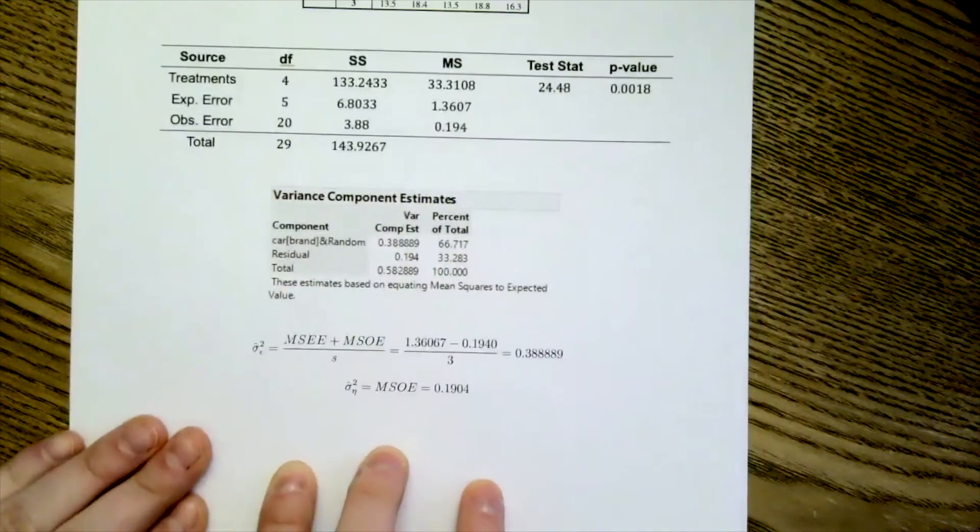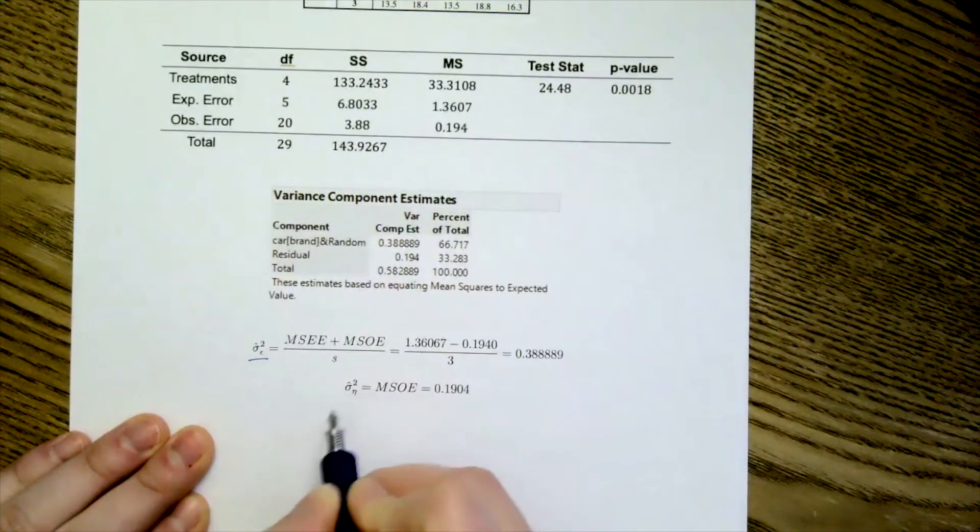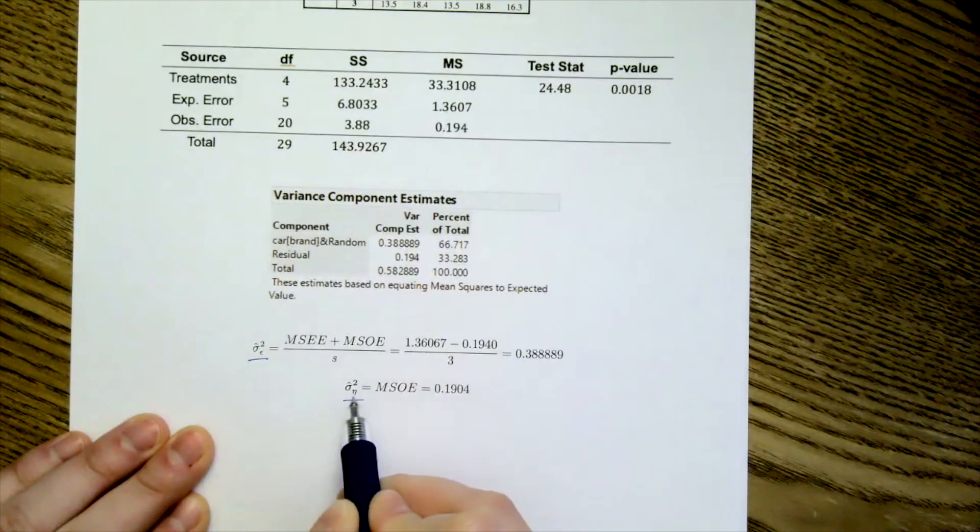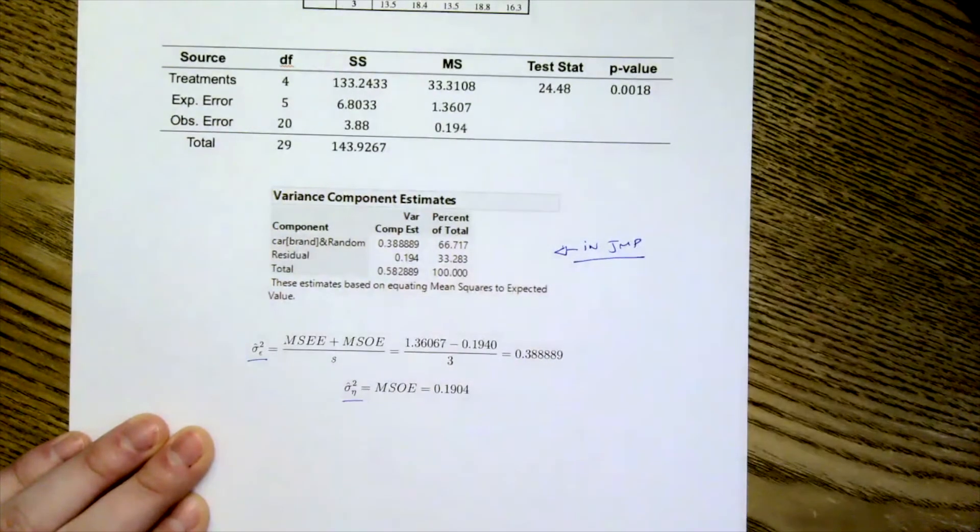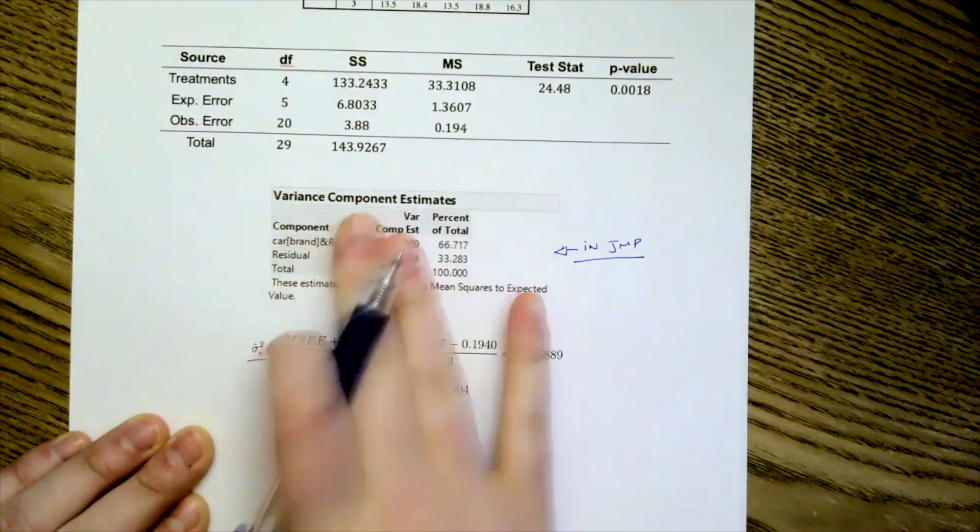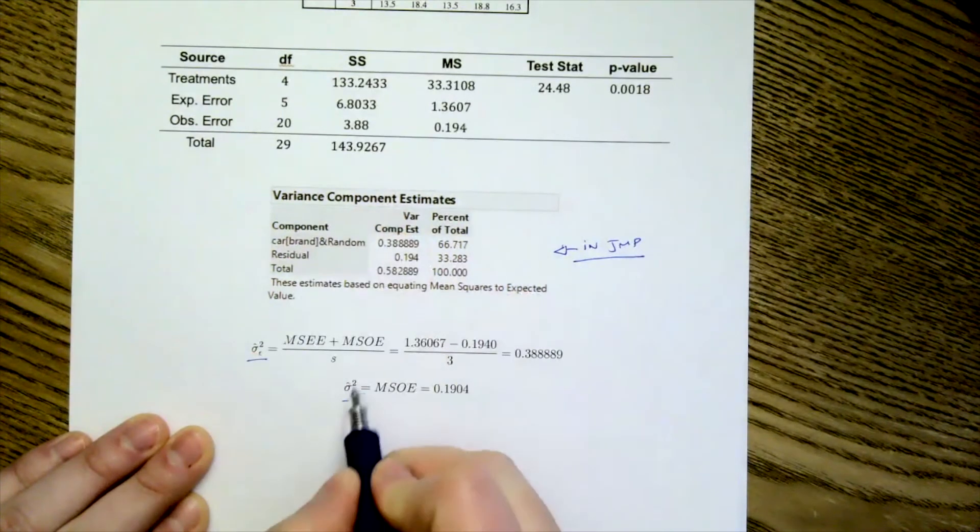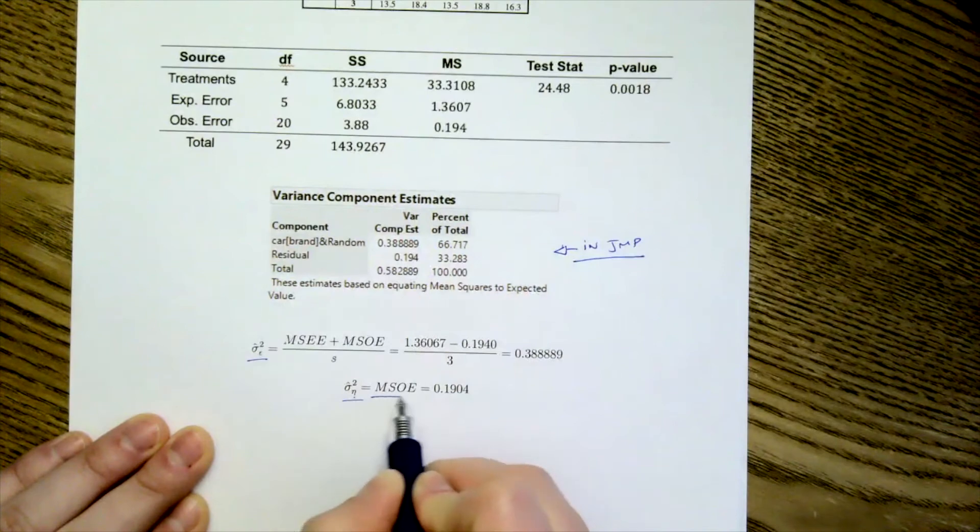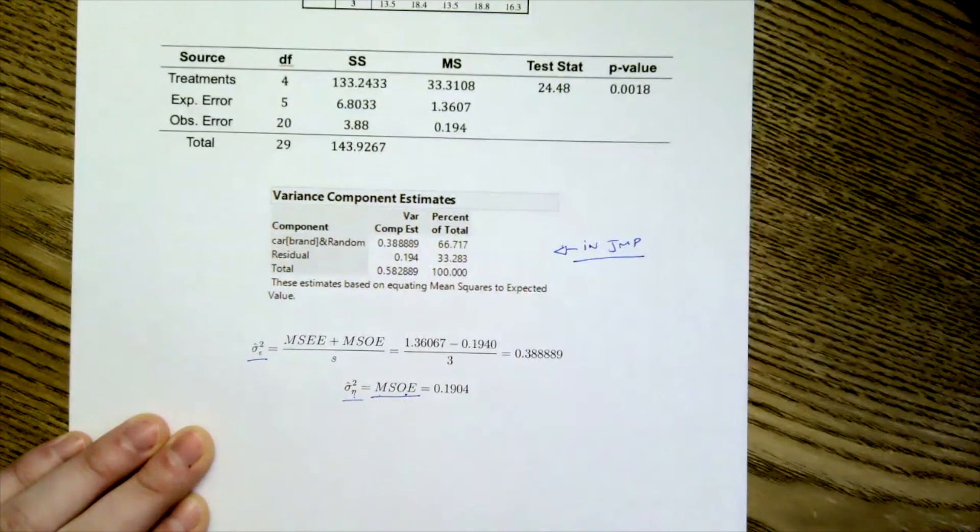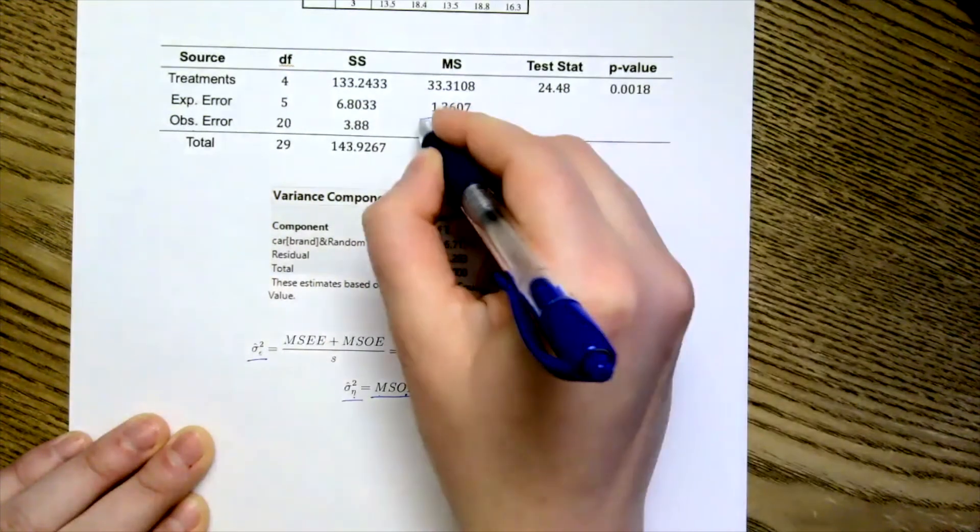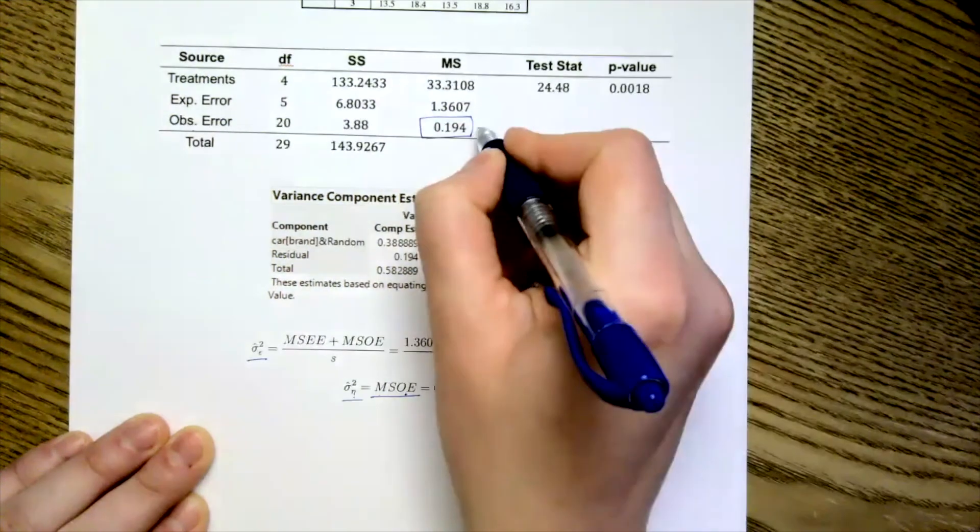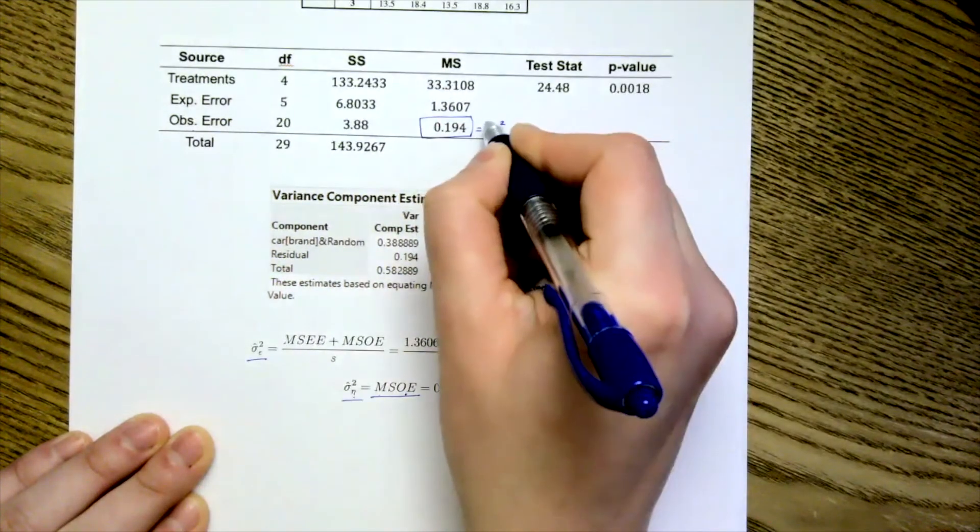Now our question is we want to be able to estimate our sigma epsilon and our sigma squared for our eta. And how we do this is provided in JUMP for my JUMP users, but let's just ignore this real quick. So in order to get our sigma hat squared for our eta, we just look at our MSOE. So we go up here to our observational error, we go over to our MS, or mean expected, and we have it right there. So this is sigma squared eta hat.